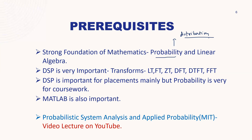DSP is very important here. You must be familiar with transforms like Laplace transform, Fourier transform, FFT, DTFT, and DFT — all are important. DSP is particularly important for placements, as it is frequently asked. Probability is very important throughout the curriculum work. MATLAB knowledge is also important. One recommended resource is the MIT YouTube video lecture course on Probabilistic Systems Analysis and Applied Probability — you should do this course before joining this branch.